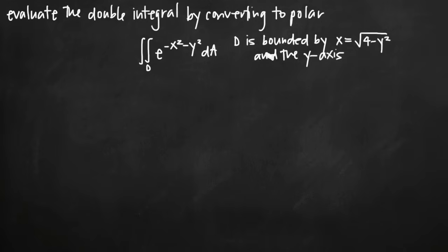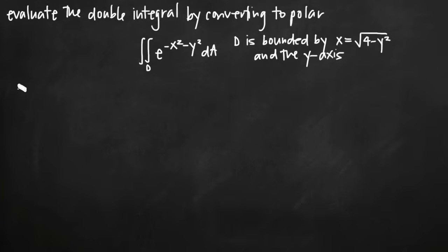First let's talk about our region. We've been told that the region D is bounded by x equals the square root of 4 minus y squared and the y-axis. Let's go ahead and sketch this. The first thing we want to do is change this equation for x into something more recognizable. If we take that equation and square both sides, on the left we get x squared, and on the right the square root goes away, leaving 4 minus y squared.